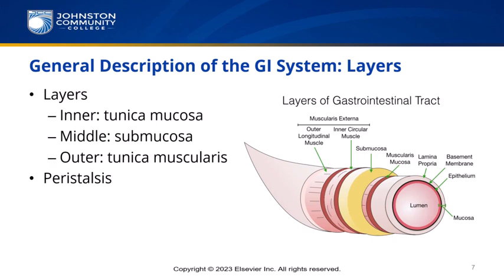The middle layer is called the submucosa — remember that sub means under. This layer holds the blood, lymphatic, and nervous tissue. The deepest or outside layer is called the tunica muscularis. Its function is to move food through the system through coordinated, continual contractions and relaxation around the digestive tube. This wave-like movement is called peristalsis — peri means around or surrounding, and stalsis means contraction.